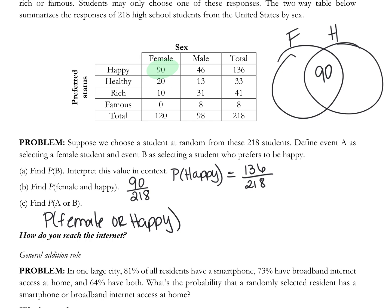So how many females are there that did not say happy? 30, right? How many students that said happy were not female? 46, that you can't see. So if I want to know the probability of female or happy, I can add 30 plus 90 plus 46 over the 218. That's 120 plus 166 over the 218.